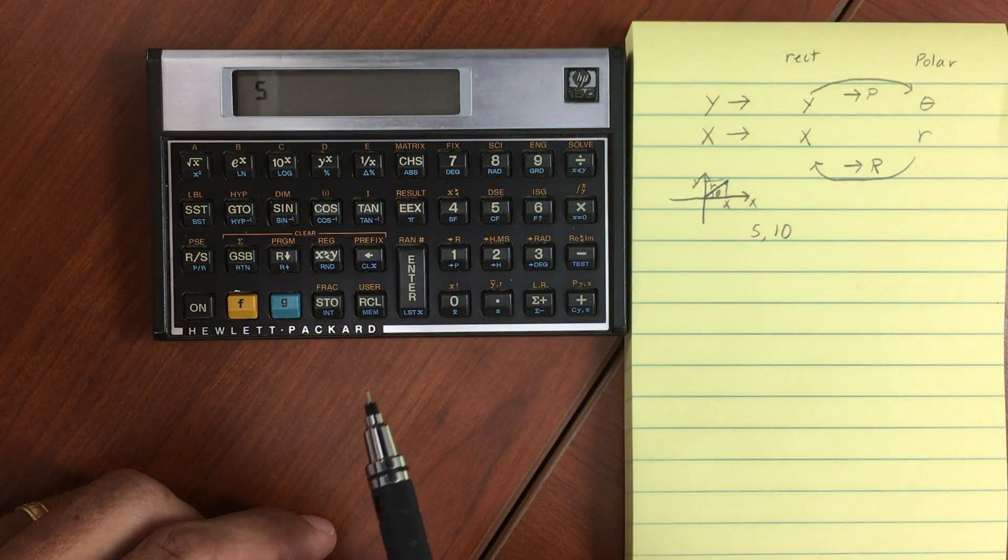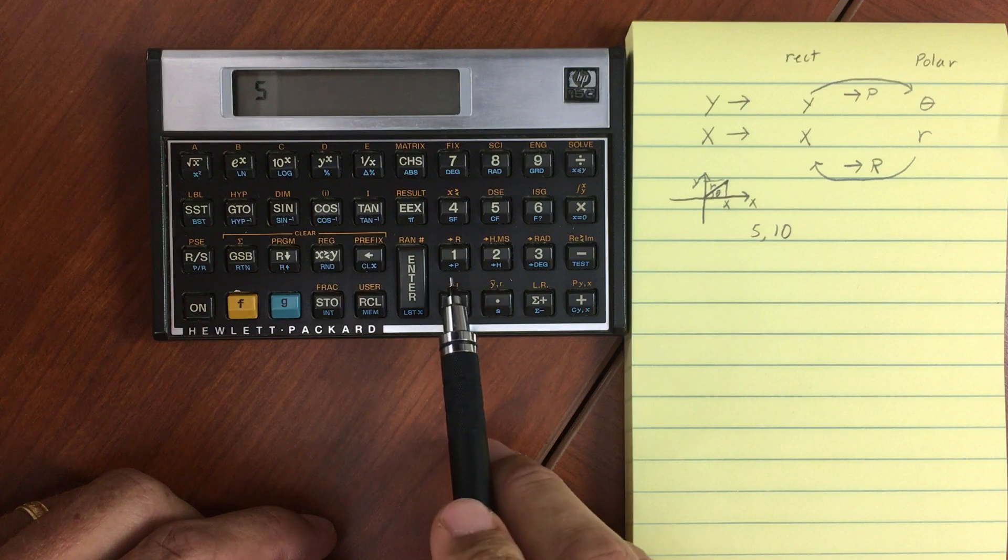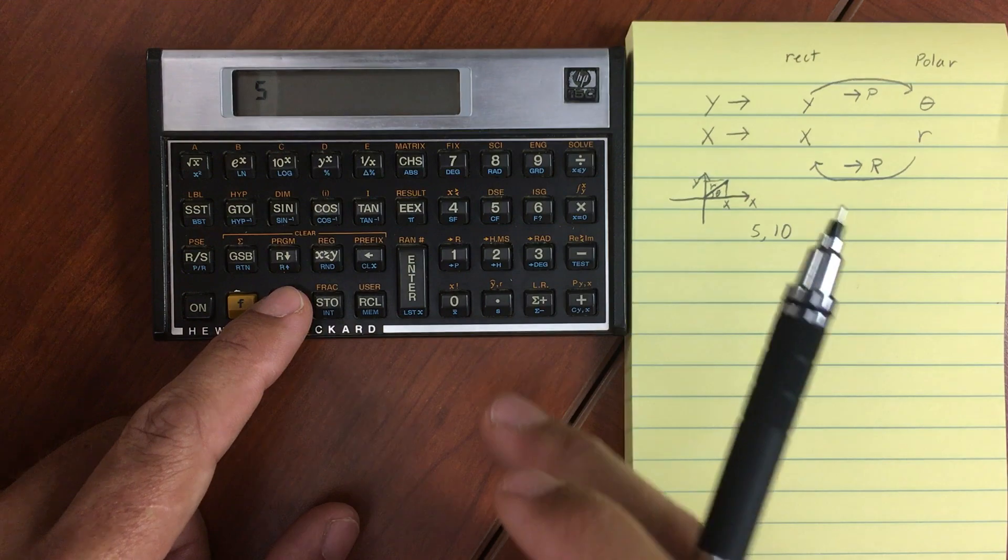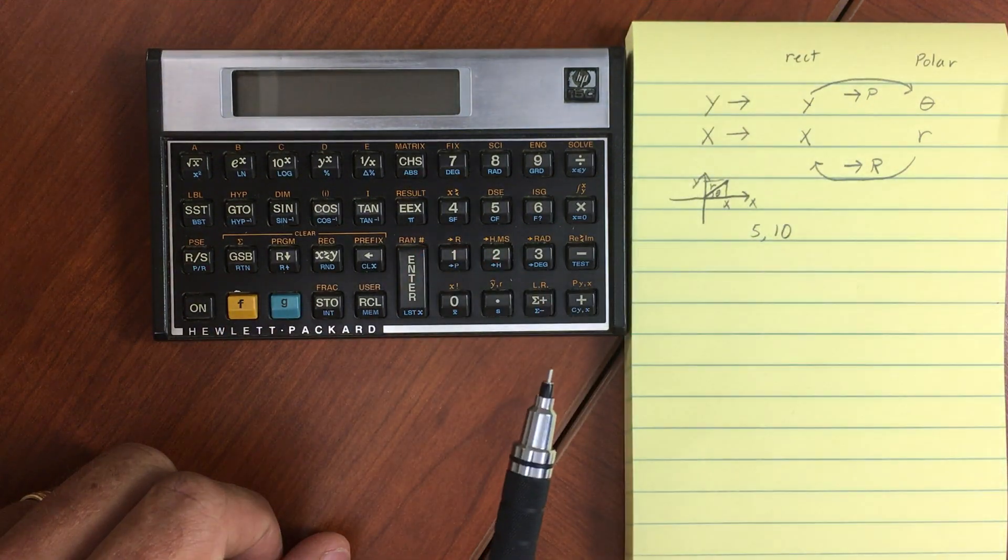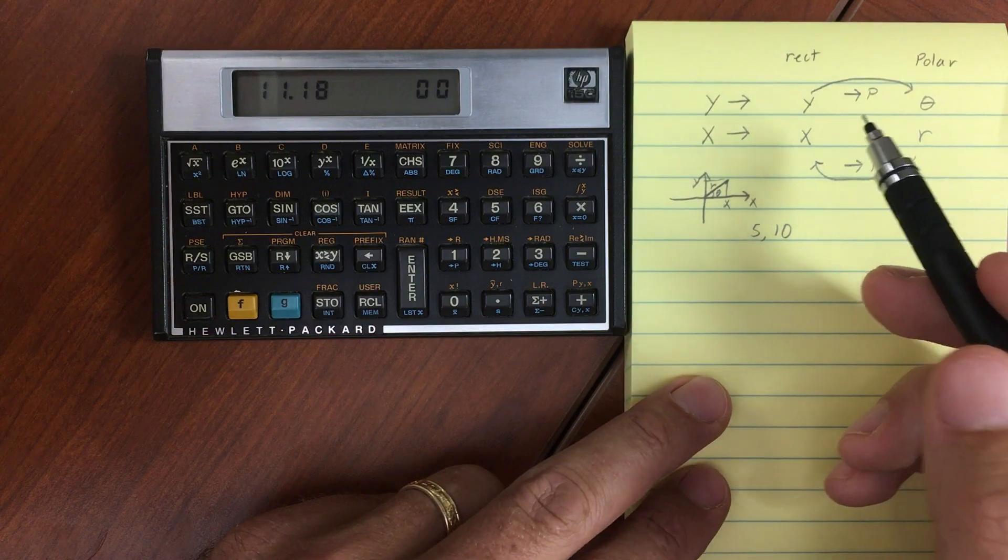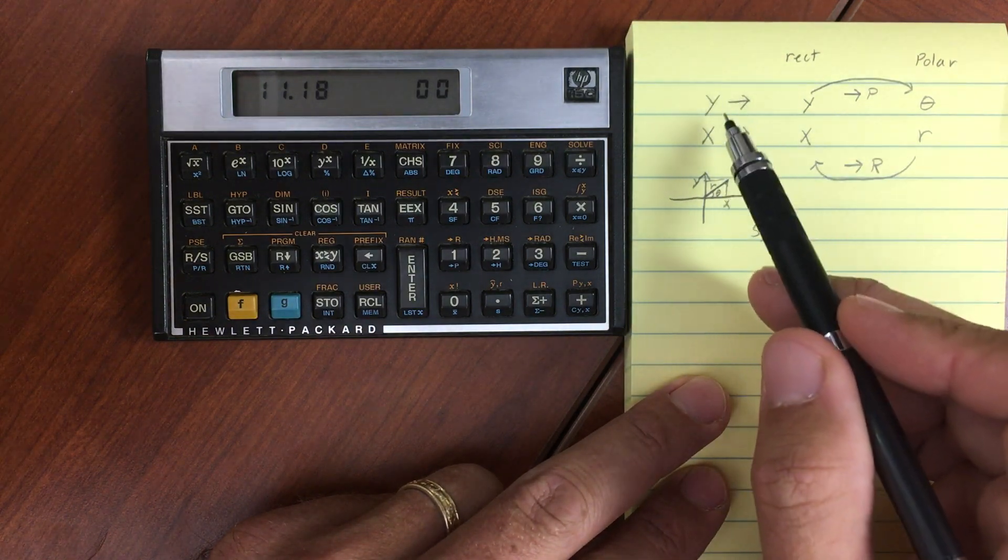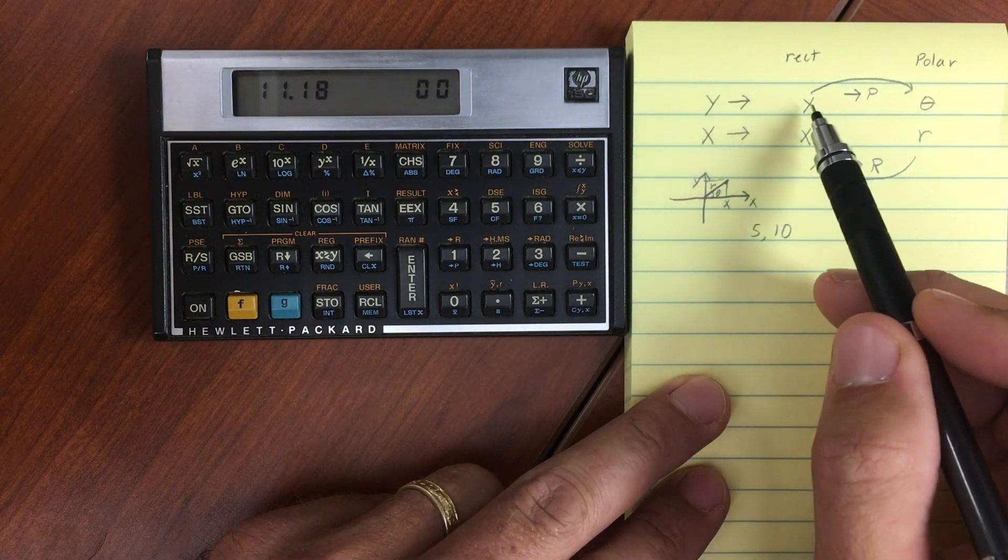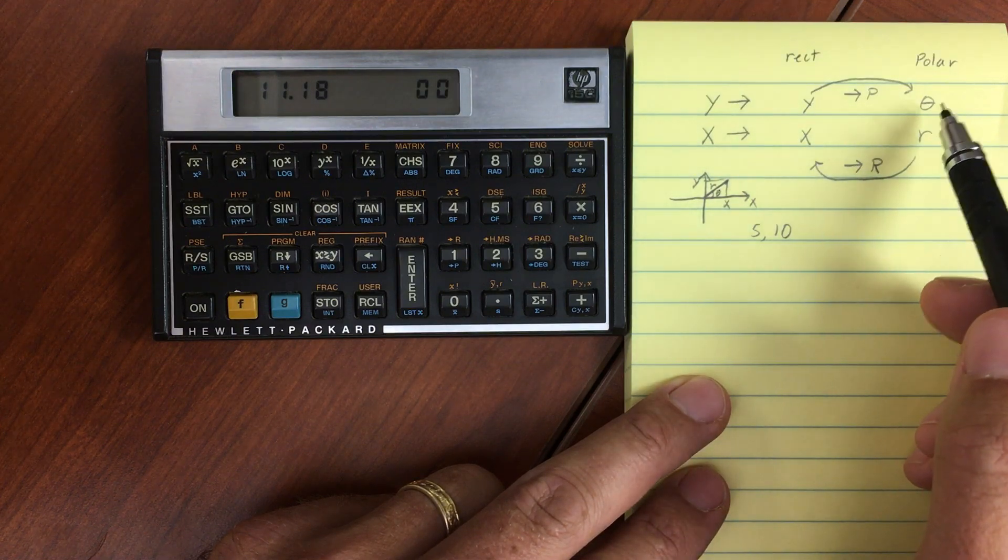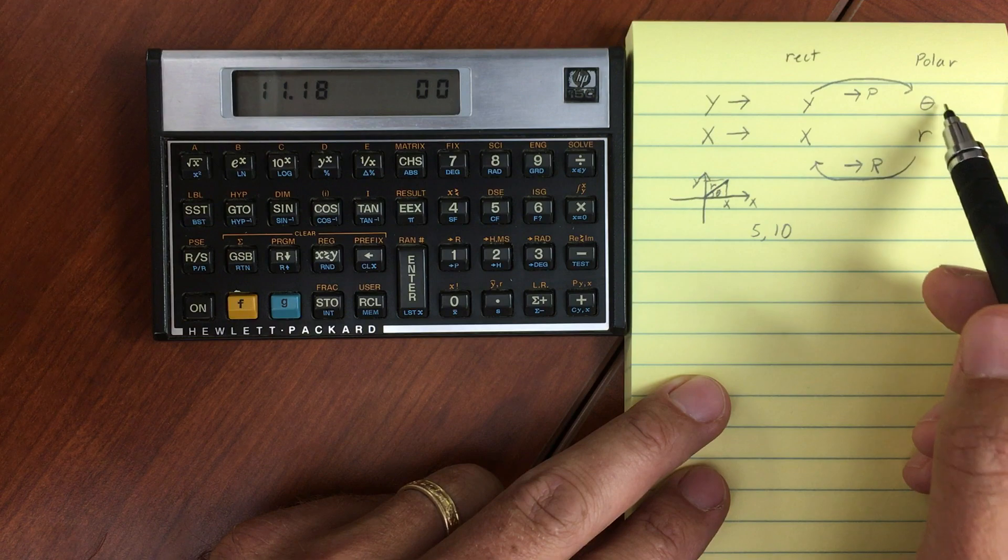And now to do the conversion to polar, you see right here blue shift P would convert to polar coordinates. And what's going to show up, as I've drawn in this diagram over here, the y portion of the stack, the x portion of the stack. You have your y and your x in rectangular. And in polar coordinates, you're going to have your r and theta.